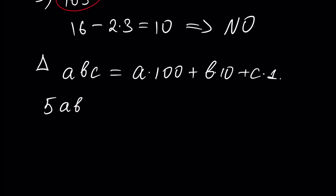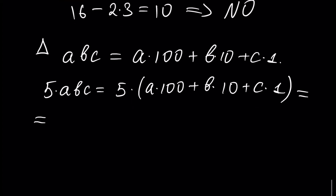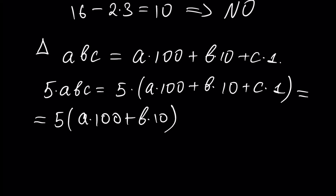We write 5 times ABC, which equals 5 multiplied by A times 100 plus B times 10 plus C times 1. This equals 50 times A times 10 plus B, and separately plus 5 times C.